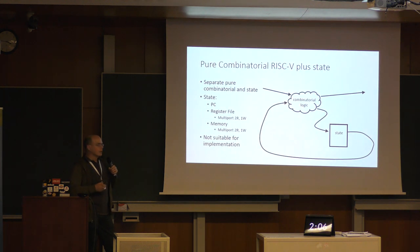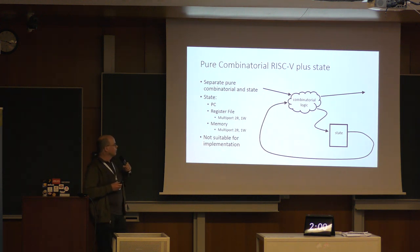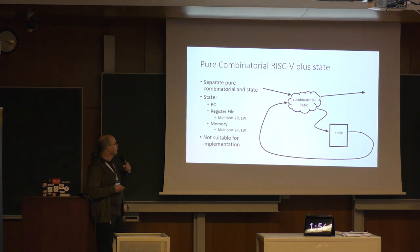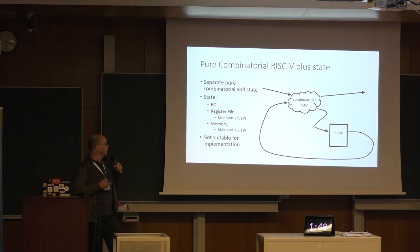My idea is just to combine those two concepts — RISC-V plus that — by taking the register file and memory-mapping it. To do that, I've written a purely combinatorial logic version of the RISC-V. That was a lot of fun; it worked, it's easy — just factor out all the state.